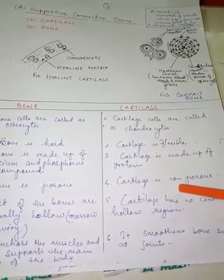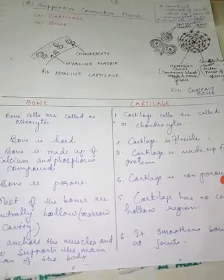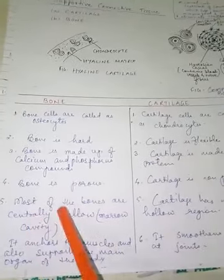Bone is porous in nature - we can see pores here - but cartilage is non-porous supportive connective tissue.